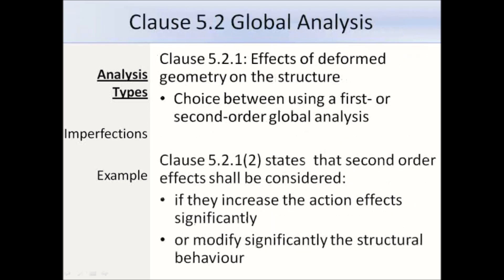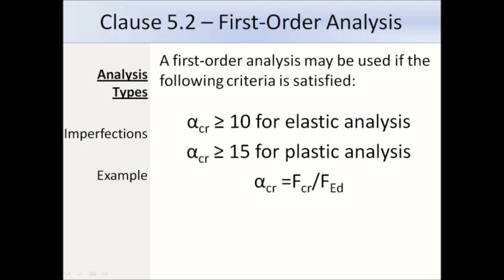Clause 5.2 is about global analysis and subpart 5.2.1 is about the effects of deformed geometry on the structure. We need to check if second order effects increase the action effects significantly or modify the structural behaviour. A first order analysis may be used if the following criteria is met: if alpha crit is greater than or equal to 10 for an elastic analysis, or if alpha crit is greater than or equal to 15 for a plastic analysis. If those conditions are met we can ignore the effects of deformed geometry. The stricter limit for plastic analysis is due to loss of stiffness associated with material yielding. Alpha crit is the ratio of the level of load on the frame to the elastic critical buckling load.